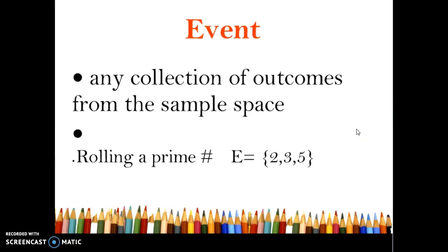An event is any collection of outcomes from the sample space. So instead of just rolling a die now we're rolling a prime number on that die. The prime numbers are 2, 3, and 5.